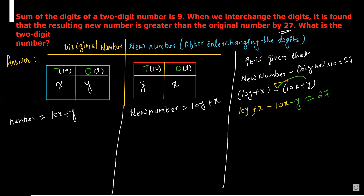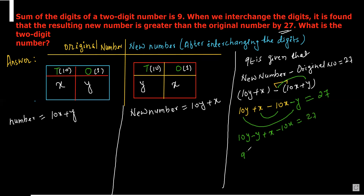Combining like terms: 10y minus y gives 9y, and x minus 10x gives minus 9x. So 9y minus 9x equals 27.